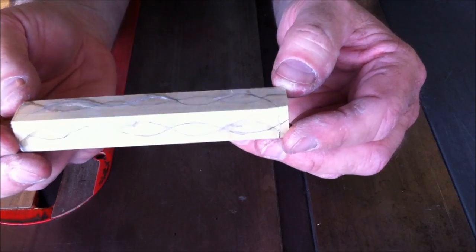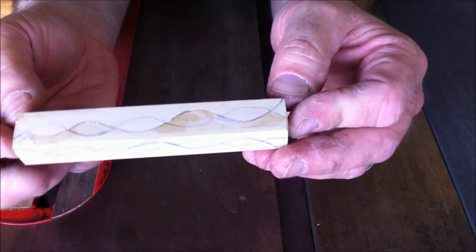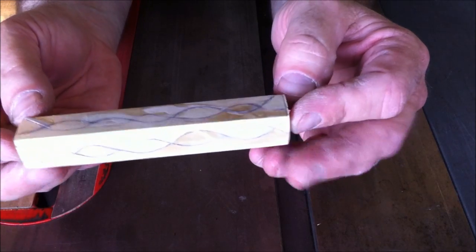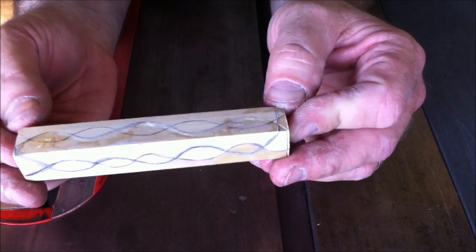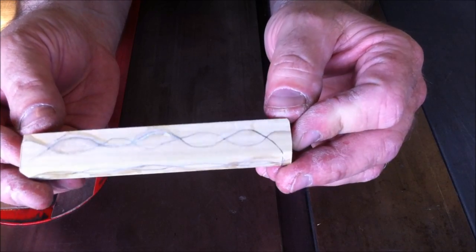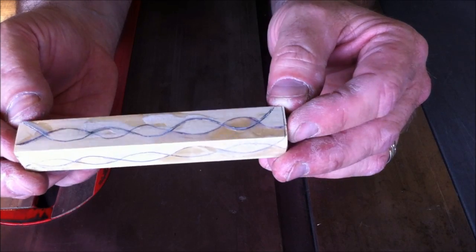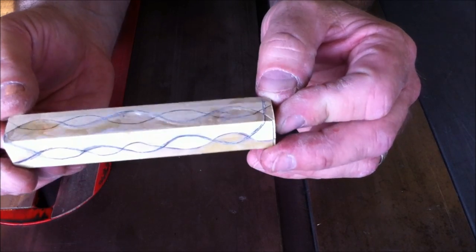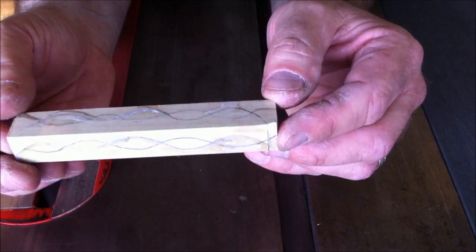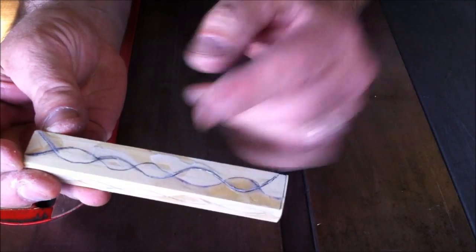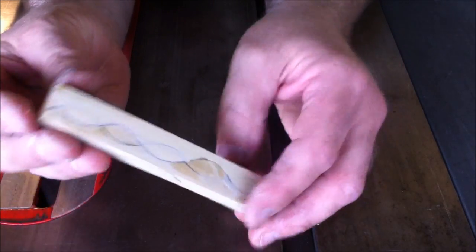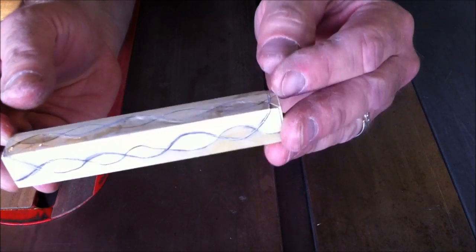I went ahead and repeated the cuts on the blank and gluing the aluminum can in three more times on this blank and came up with sort of a chain link pattern. Like I said, I didn't get real critical with making sure I cut perfectly on the lines or anything like that. I just had fun with it and made what I think is a cool looking blank. I'm going to go ahead and get this cut, get some tubes drilled in it, and turn it, and we'll see what it looks like.